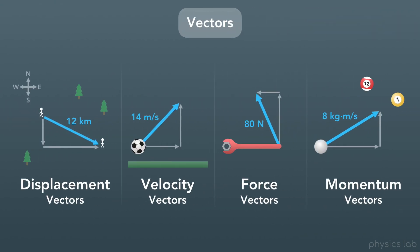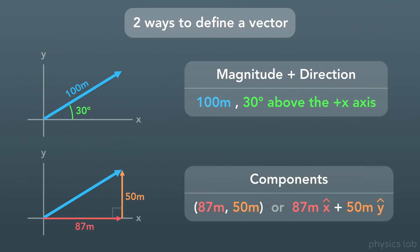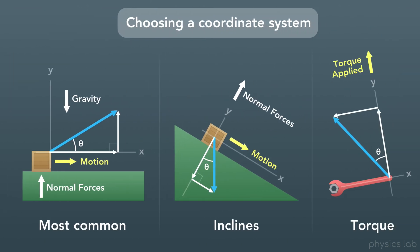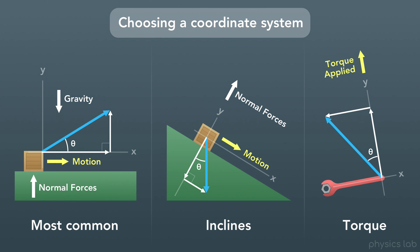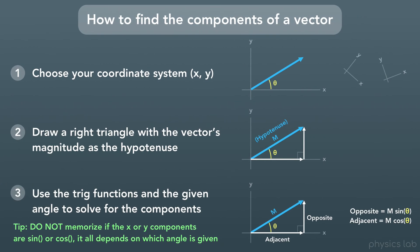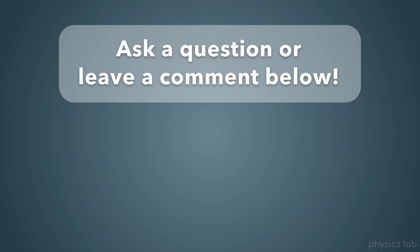Let's do a quick recap. First, we learned what vectors are, and the different types of vectors that we might use in physics. Next, we learned the two ways to define a vector: either by using the magnitude and direction, or by using the two components. We talked about why we might choose to orient our coordinate system in different ways, depending on the problem that we're solving. And we walked through and summarized how to find the components of a vector using right triangles and trig functions. So that's it for this video, thanks for watching, and definitely ask a question or leave a comment below about the stuff we just covered, or anything related to physics. And I'll see you in the next video.